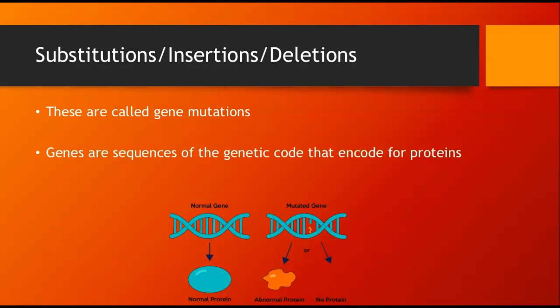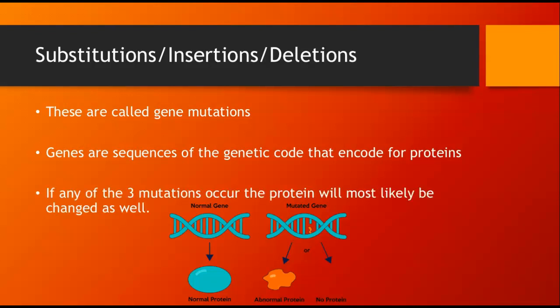These are called gene mutations. Genes, of course, are the sequences of the genetic code that encode for proteins. Remember I told you that there are going to be portions of the genetic code that do not code for proteins. Well, the ones that do are called your genes. If any of the three mutations occur, the protein will most likely be changed as well, right? Unless it's one of those point substitutions where you luckily get a codon that also encodes for the same amino acid, that protein is most likely going to be changed.